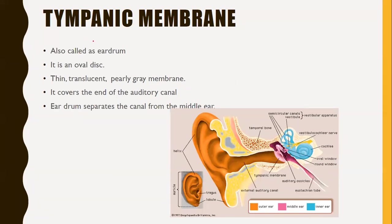Next is the tympanic membrane. It is a partition between the external ear and the middle ear, otherwise called the eardrum. It is an oval-shaped, thin, translucent, pearly gray membrane that covers the end of the auditory canal. In this picture you can see the tympanic membrane separating the external ear from the middle ear, with the auditory canal on the external side.